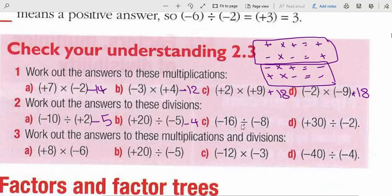When both are negative, the result will be positive. 16 divided by 8 is 2. 30 divided by 2 is 15, but since one is negative and one is positive, this 15 will be negative.